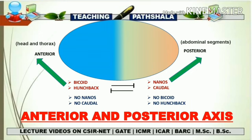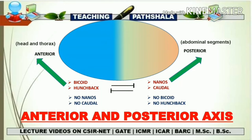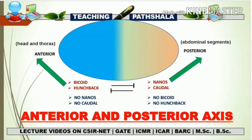Wherever there is a presence of bicoid and hunchback, there will be absence of nanos and caudal, and vice versa. Bicoid and hunchback give rise to the anterior axis of Drosophila, and nanos and caudal give rise to the posterior axis. Bicoid acts as a morphogen gradient — high concentration of bicoid at the anterior side and low at the posterior, and high concentration of nanos and caudal at the posterior side with low concentration at the anterior.